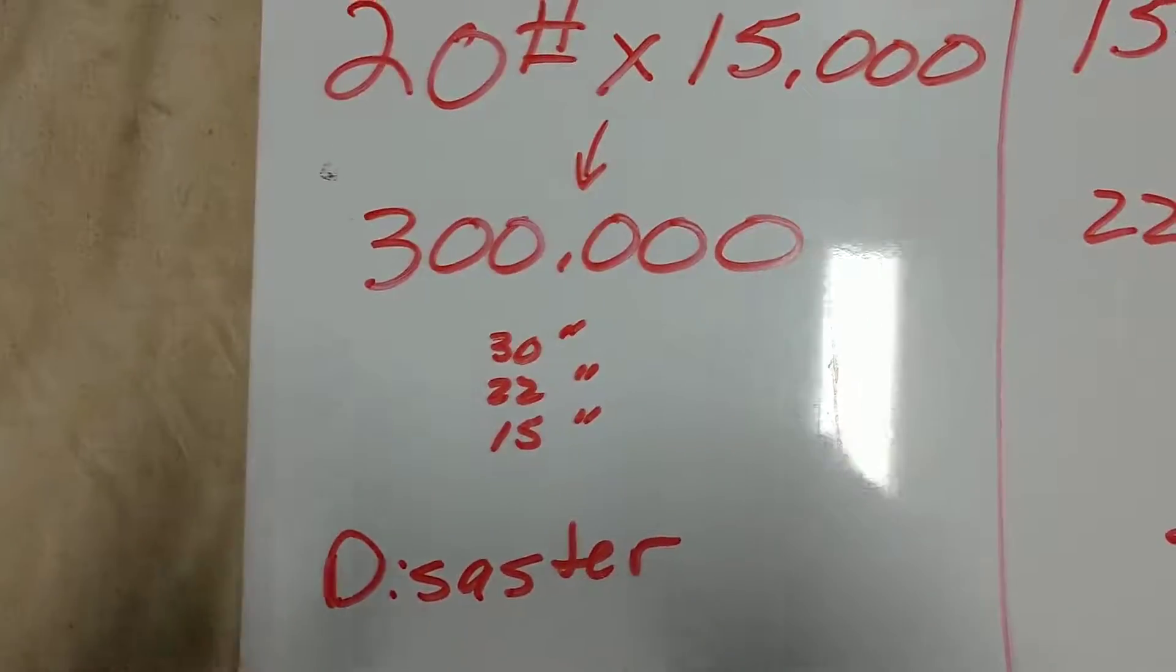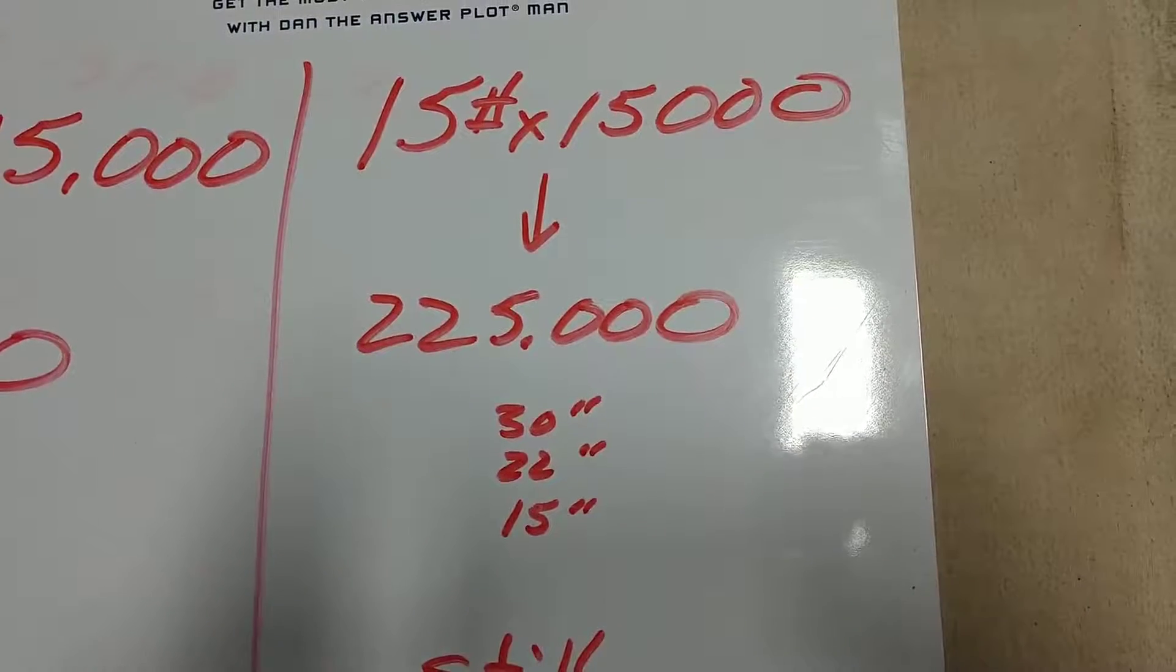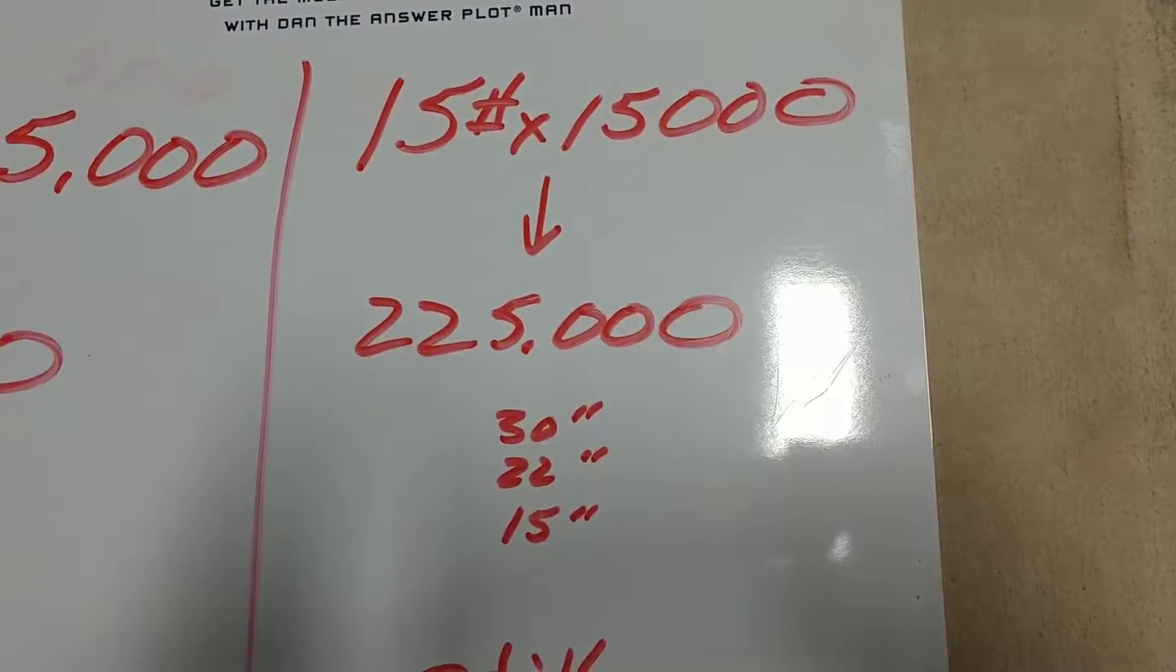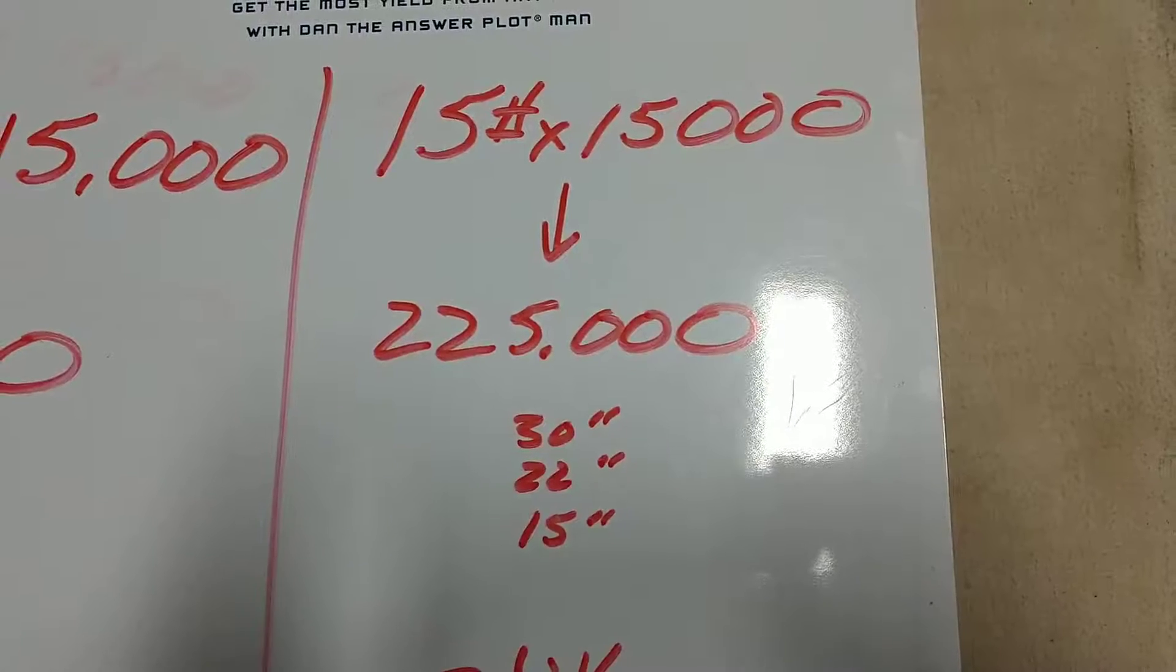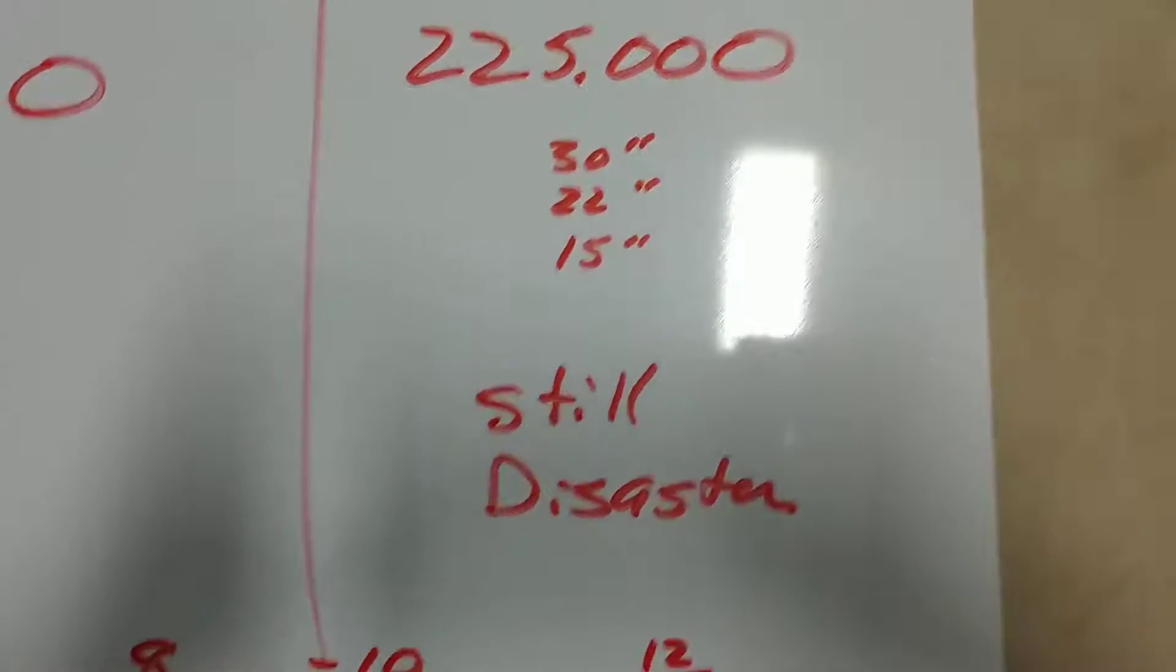Looks like we're going to have a disaster. So even at 15 pounds, 15,000 seeds per acre, 225,000 plants out there in a 30 inch row, maybe even a 22 or a 15. I think we still have a disaster.